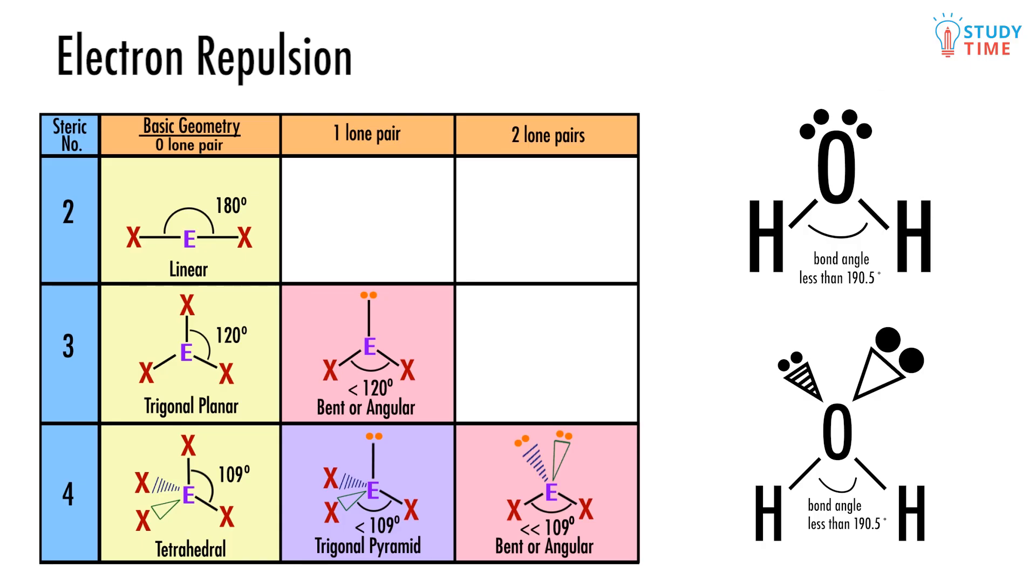The bonding pairs are far more repulsed from the non-bonding pairs than they are from each other, explaining the much smaller bond angle.